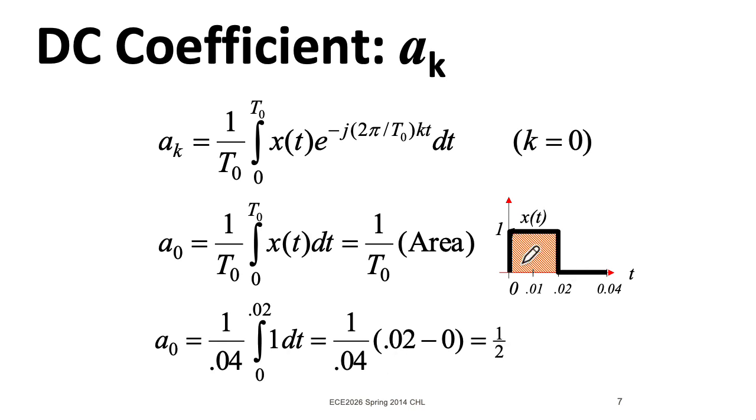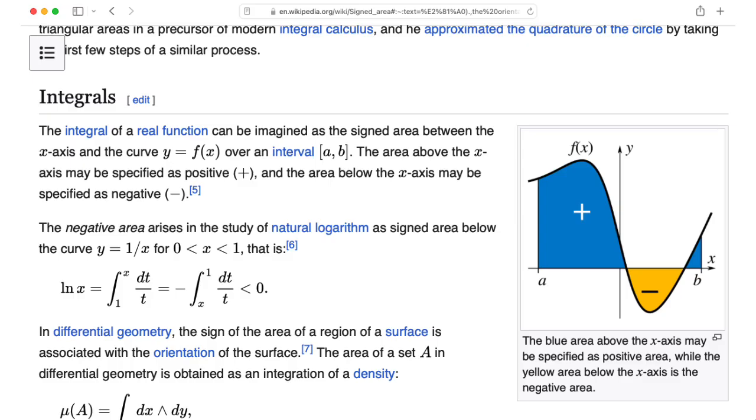And that's very intuitive. If you just look at the function, okay, it's at one half the time and zero half the time, it makes sense that the DC value is a half. One word of warning, this area is a signed area. So bits of area of your curve that go below the horizontal axis subtract from the bits of area that are above the horizontal axis.